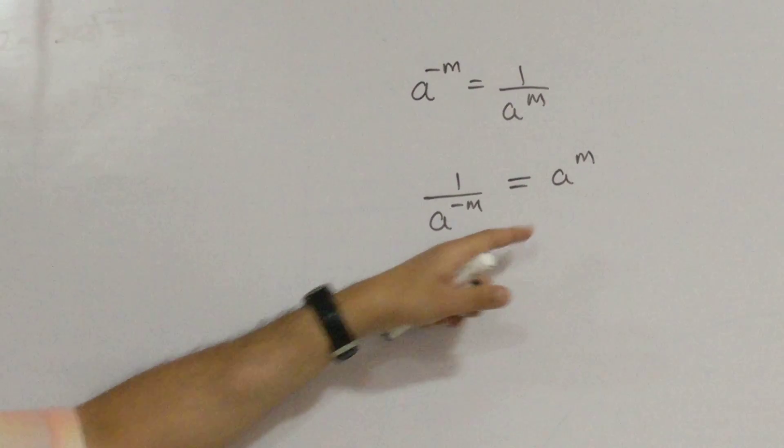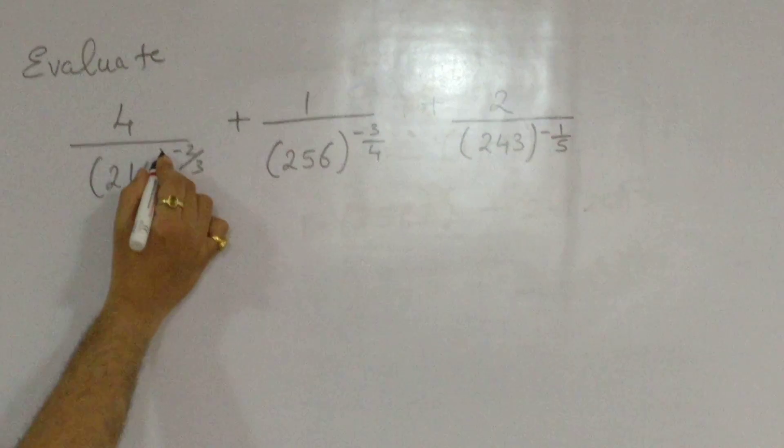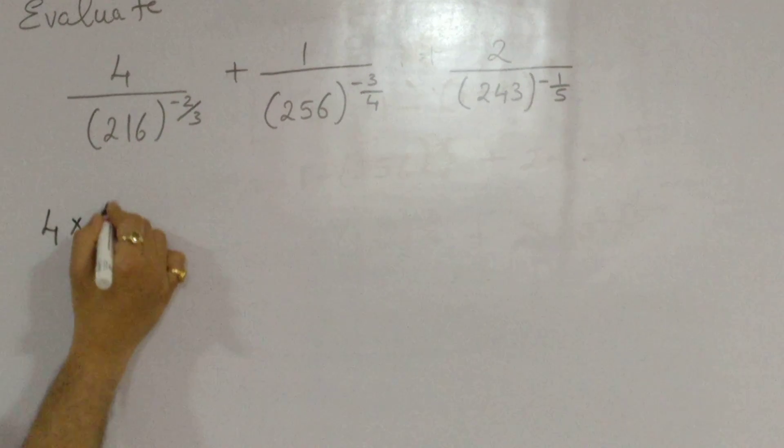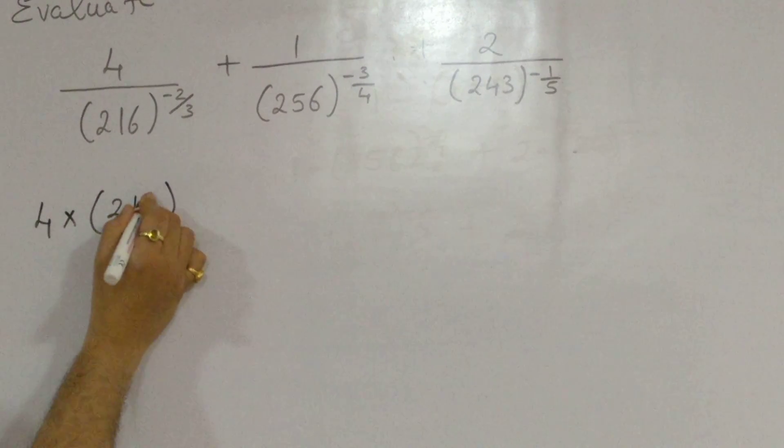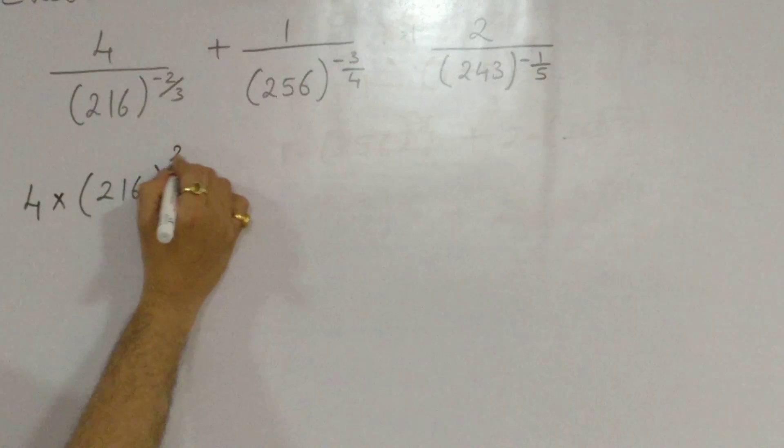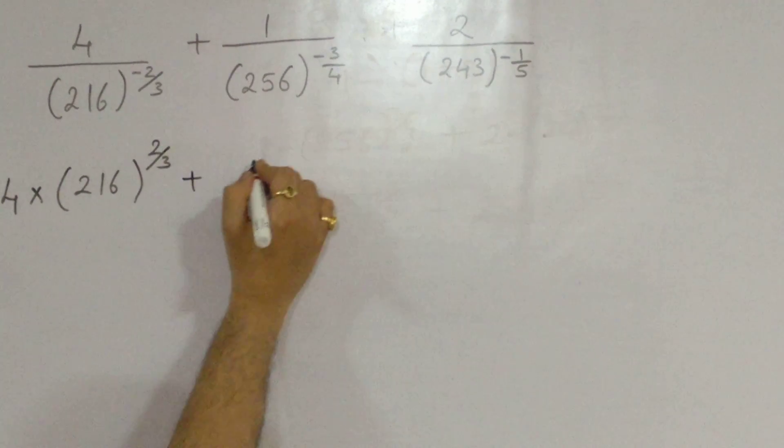It is this particular law is what we are going to apply in our sum. So, our sum has 4 upon 216, the whole raised to minus 2 by 3, what I am going to write down as 4 into 216, which had a negative power, but when I shift it to the numerator, the power becomes positive.